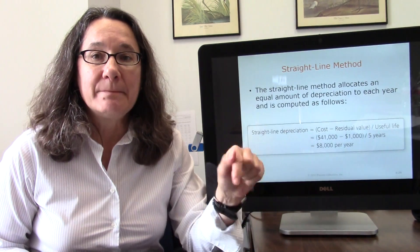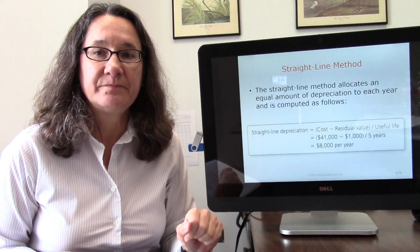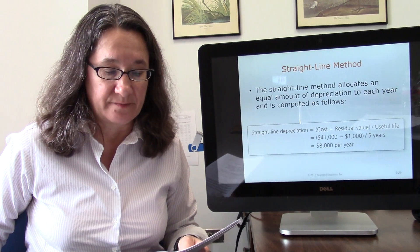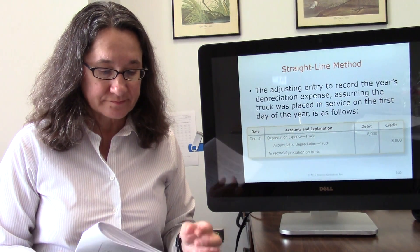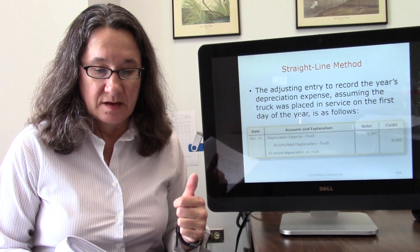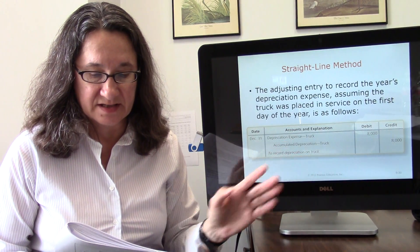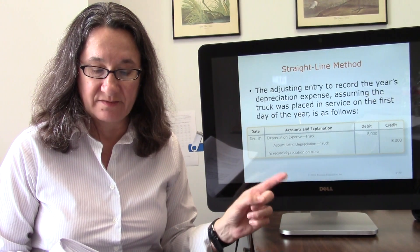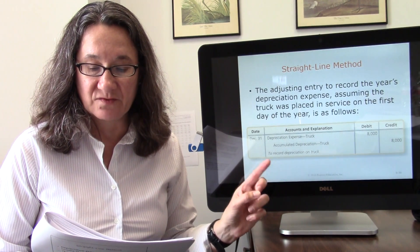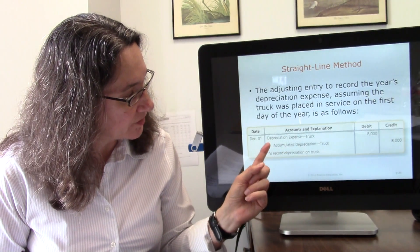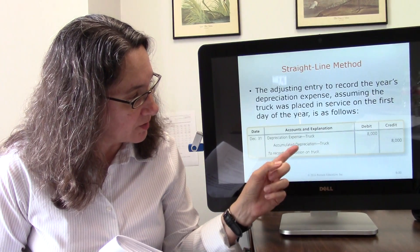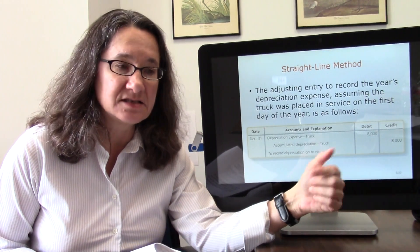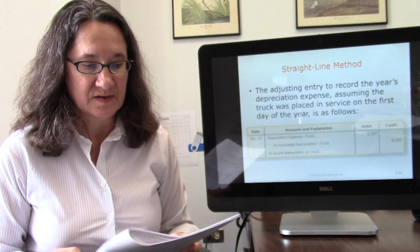Every year you're going to depreciate $8,000, add $8,000 expense, and increase accumulated depreciation by $8,000. The adjusting entry at the end of the year to record depreciation looks like this. In the Smart Touch Learning example, the depreciable cost is $40,000 divided by an estimated useful life of five years, giving annual depreciation of $8,000 per year. So every year you'll debit depreciation expense — truck, and credit accumulated depreciation — truck. Expenses are always debits; accumulated depreciation being a contra asset is a credit.